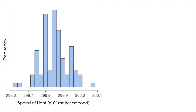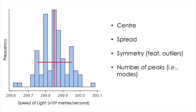Here is a summary of things to look out for in a histogram: you need to find where the center is, how much spread there is, whether the symmetry is okay, whether outliers exist in the data set, and whether there are multiple peaks.